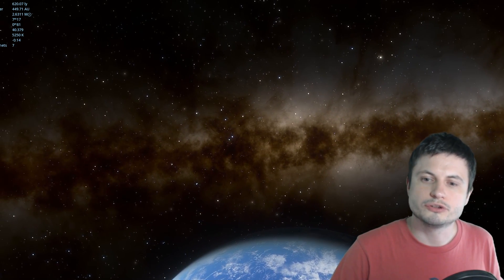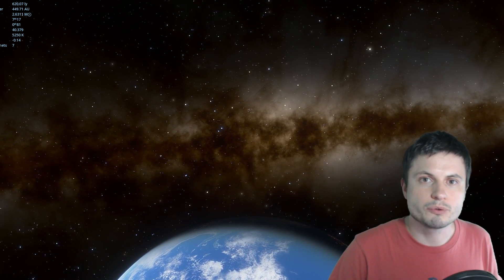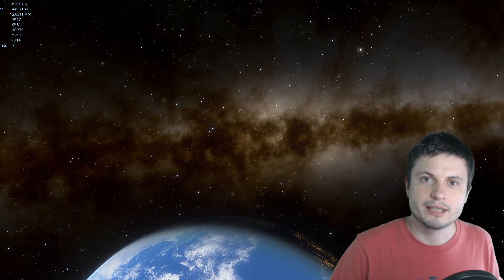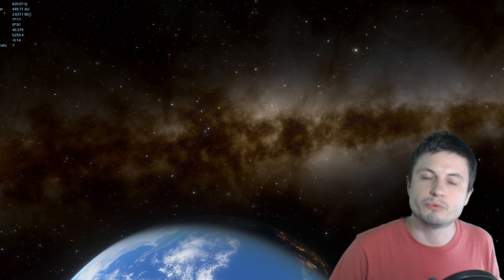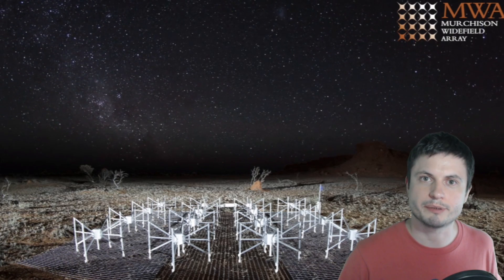Now this is what it looks like in visual light, basically the light that we can see. But what if we looked at it in a different frequency, for example radio waves? Now this is exactly what the recent research did. The researchers, whose paper you can find in the description below, or actually several papers.